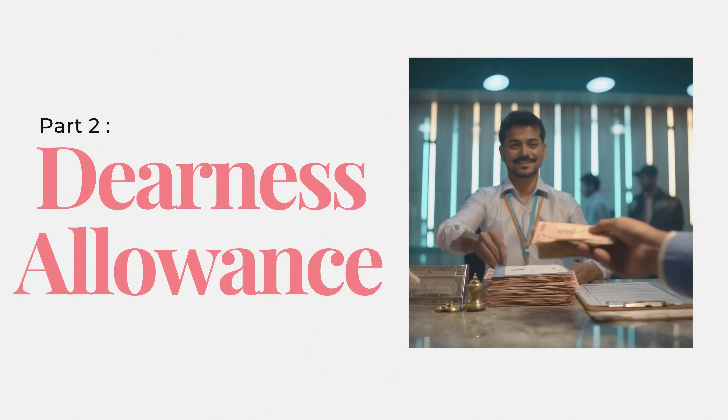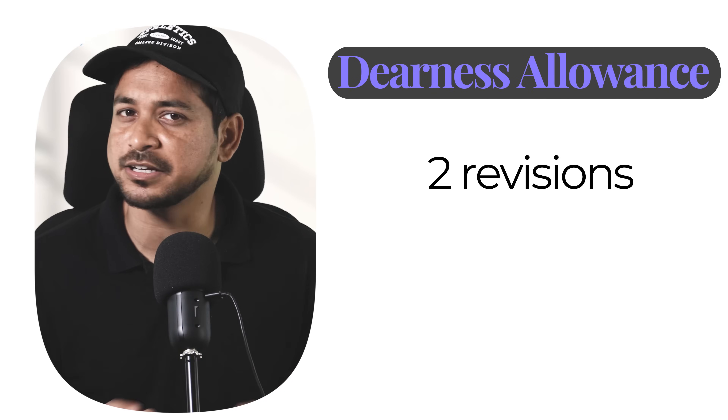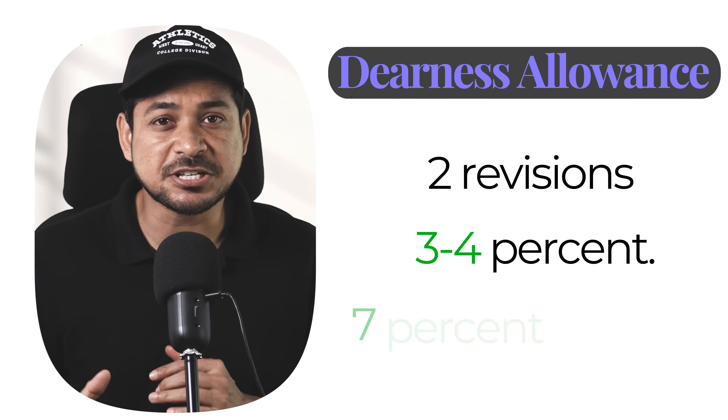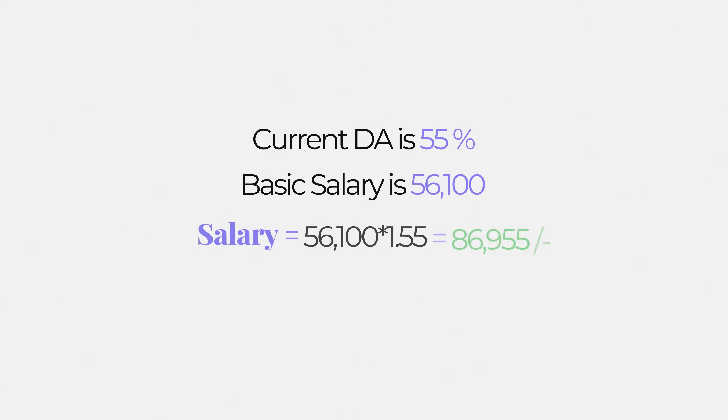The second part that comes is Dearness Allowance. This is the second most important part of your salary. DA takes care of inflation in the market. Usually, there will be two revisions of DA in a year, and the revisions will be in the range of 3 to 4%. So on an average, DA increases by 7% a year. Since India's inflation rate is also in the range of 6 to 7%, it takes care of the inflation in our country. This percentage is added to the basic, so if the current DA is 55% and your basic is ₹56,100, then the salary becomes ₹56,100 × 1.55.